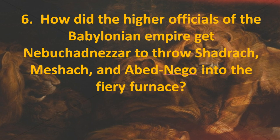Number six: how did the higher officials of the Babylonian Empire get Nebuchadnezzar to throw Shadrach, Meshach, and Abednego into the fiery furnace? The answer: they lied and tricked the king. This group did not like Daniel — they hated him, they hated the Jews. All throughout the book we read about their trickery, lies, and deceit, not just toward Nebuchadnezzar but toward some of the other kings too.